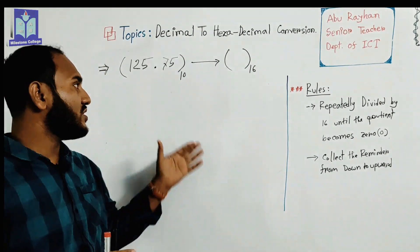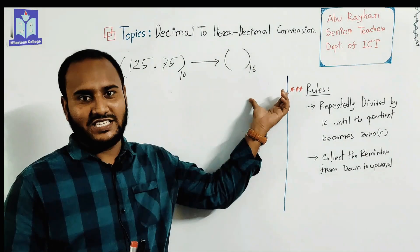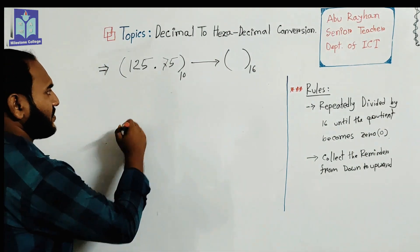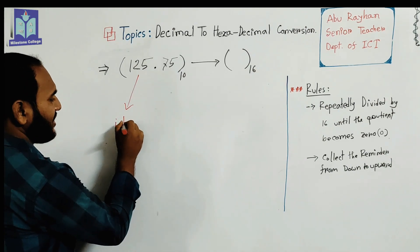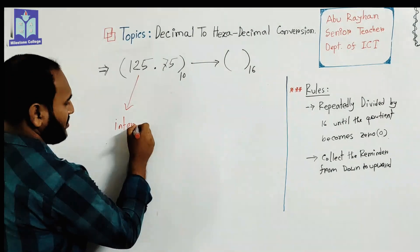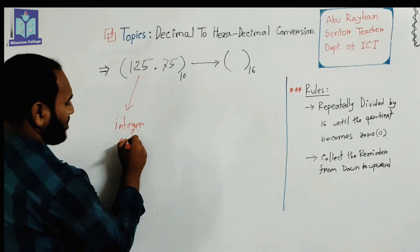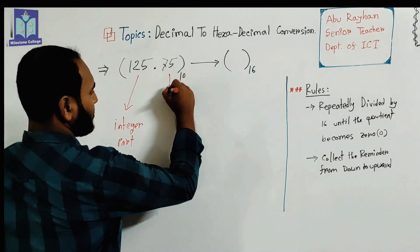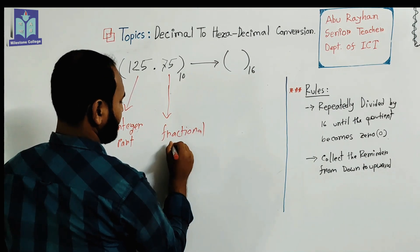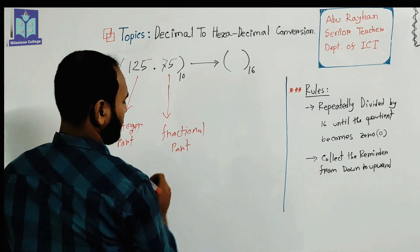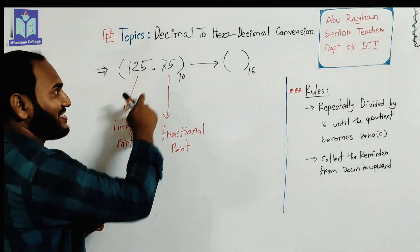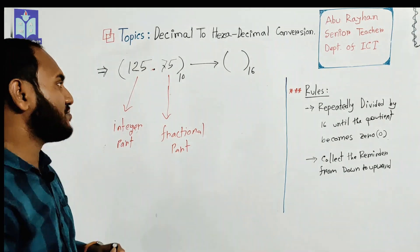Here is a number that we want to convert from decimal to hexadecimal. In this number there are two parts: this is called the integer part, and this is called the fractional part. The integer part and fractional part are separated by a point which is called the radix point.